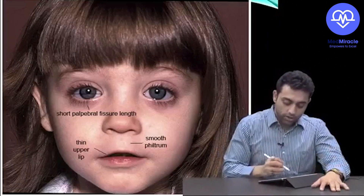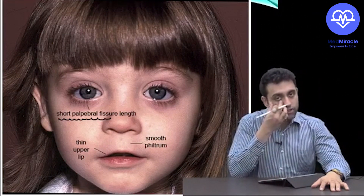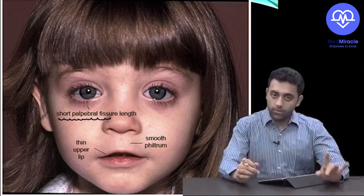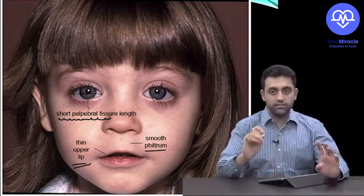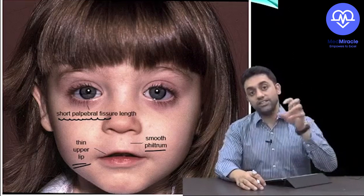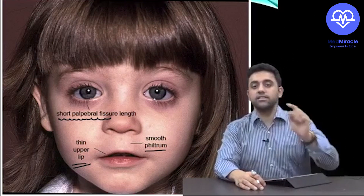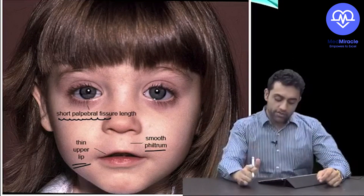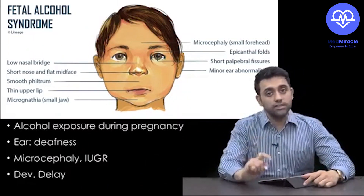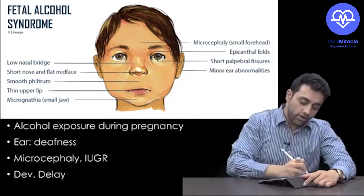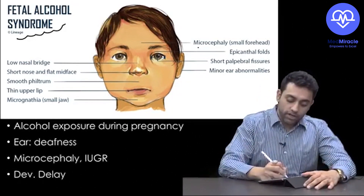Additionally, can you see the short palpebral fissure — the reduced distance of the eye opening? So we have: short palpebral fissure, smooth philtrum, and thin upper lip. Combined with a history of the mother consuming alcohol, we reach the diagnosis of Fetal Alcohol Syndrome.